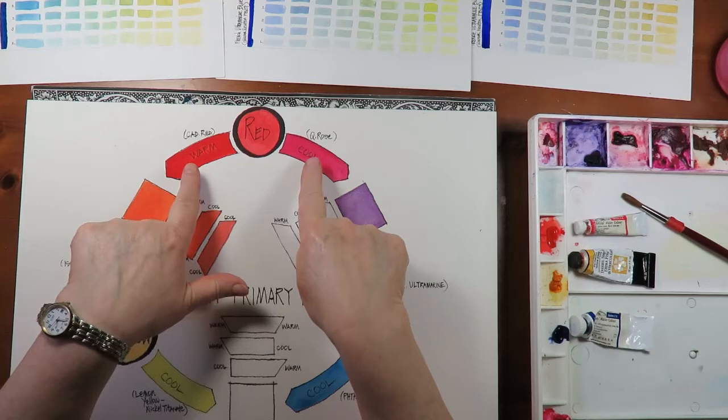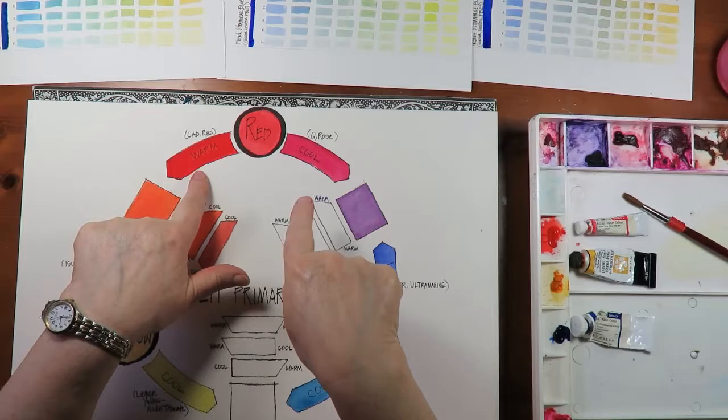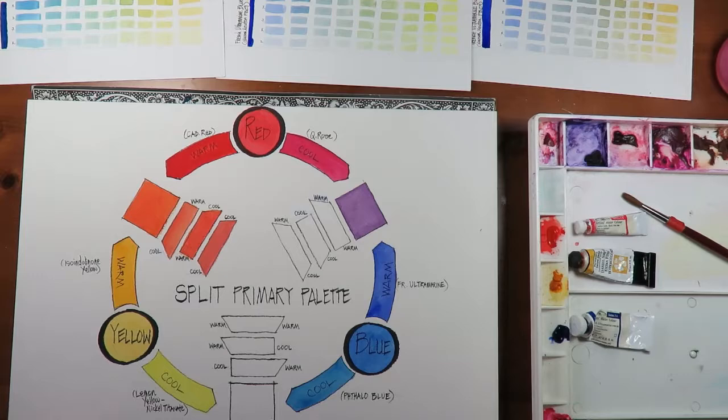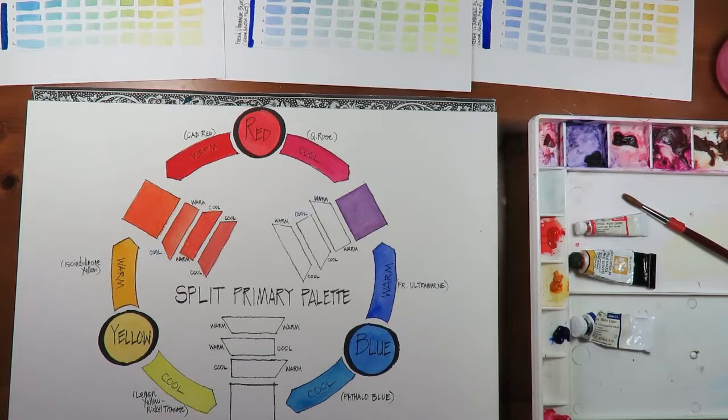I used a cool and a warm red, the quinacridone rose and a cadmium red, to get that red. It looks like a primary red. This looks like a primary blue. I got that from a French ultramarine and a phthalo blue here. And here too yellow, an isoindolinone yellow and a lemon yellow to get our primary yellow.